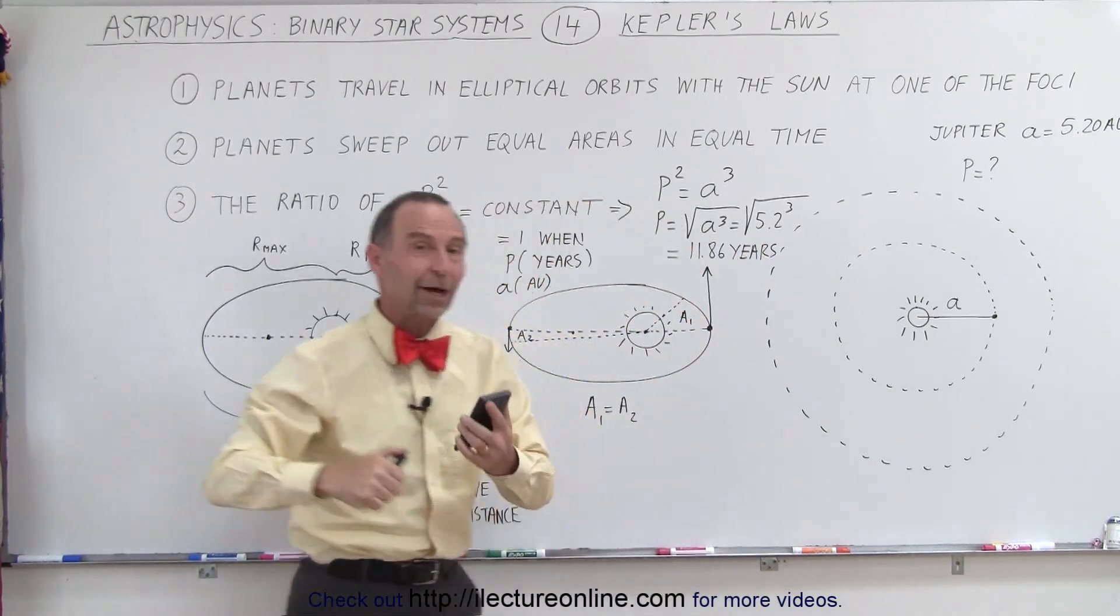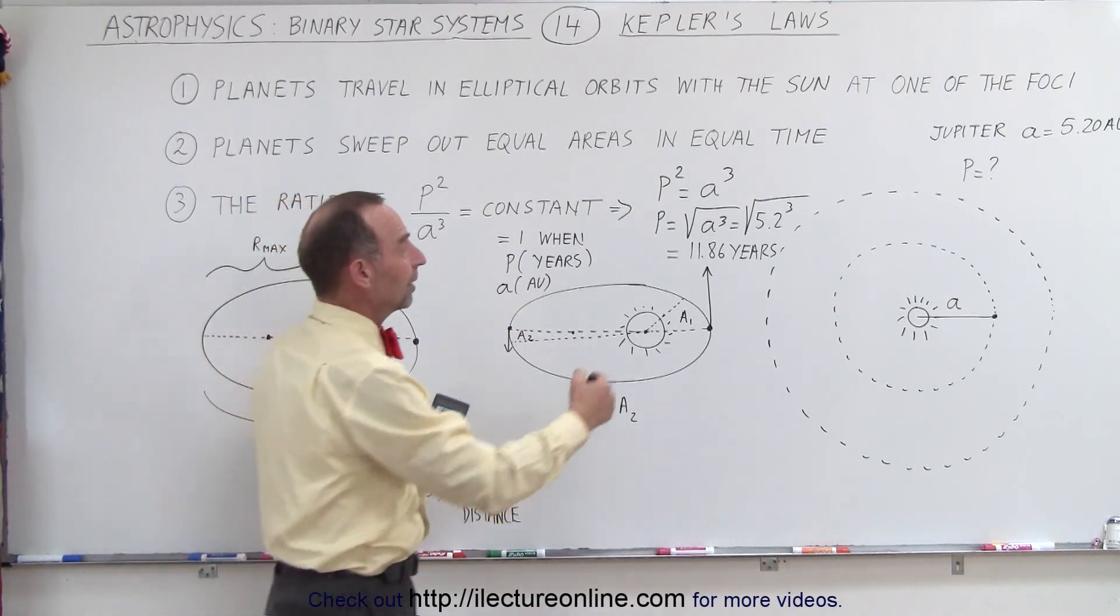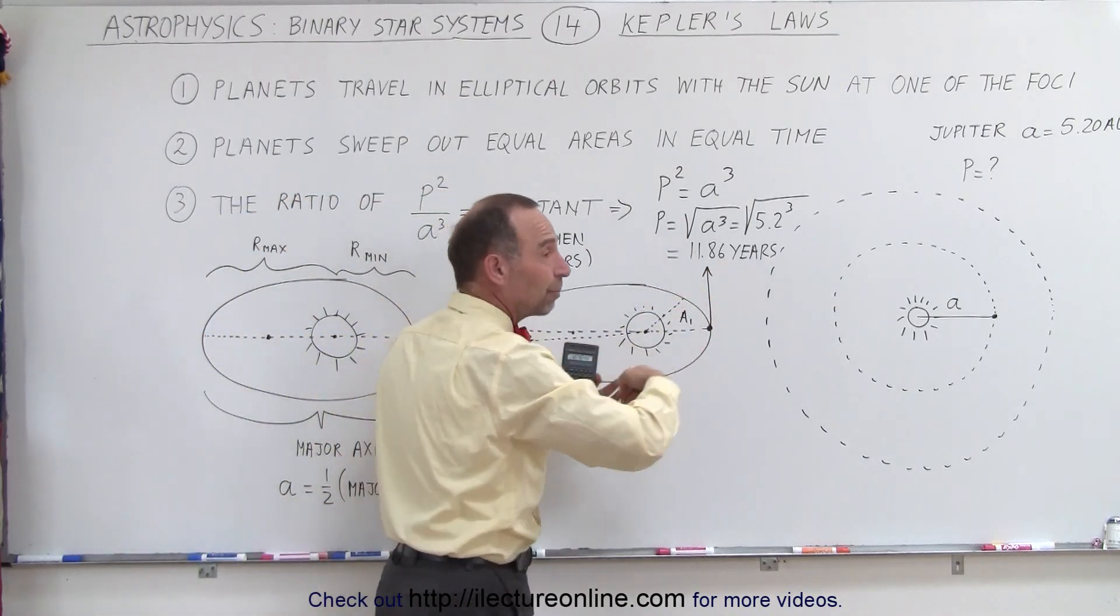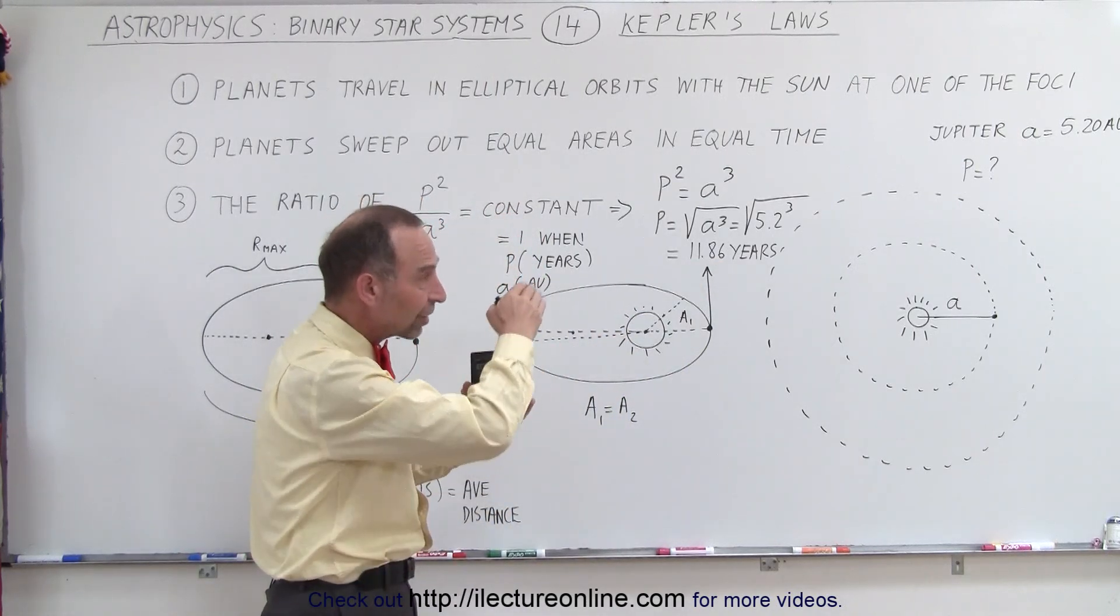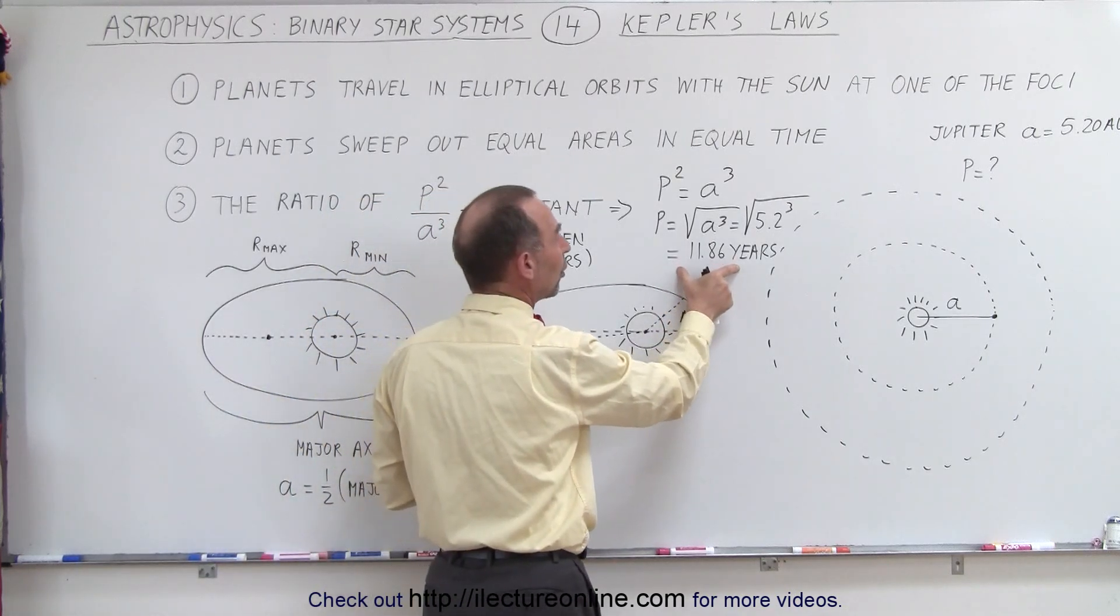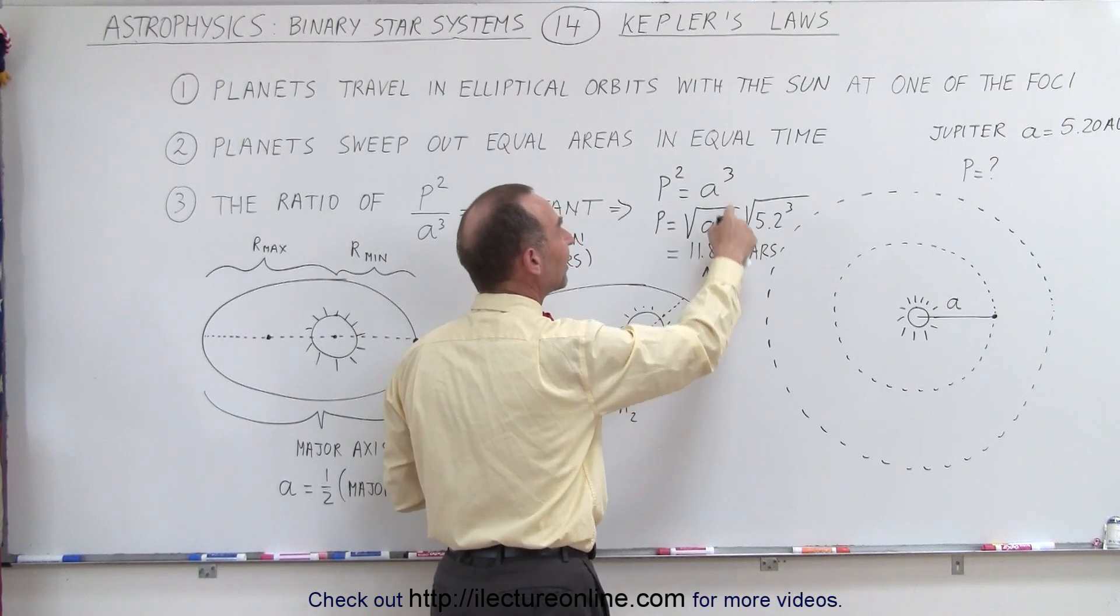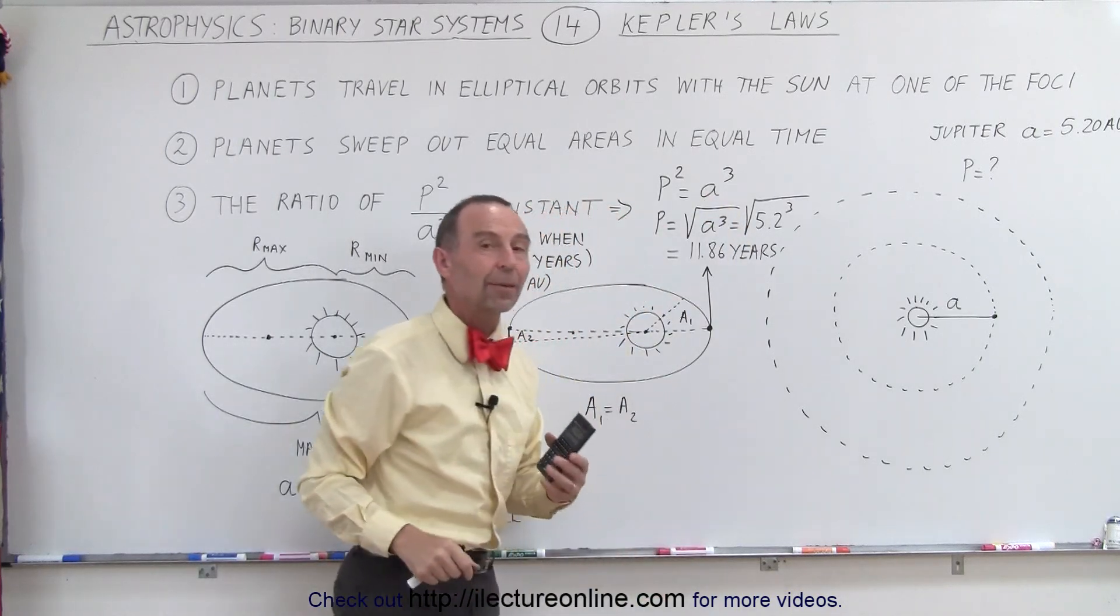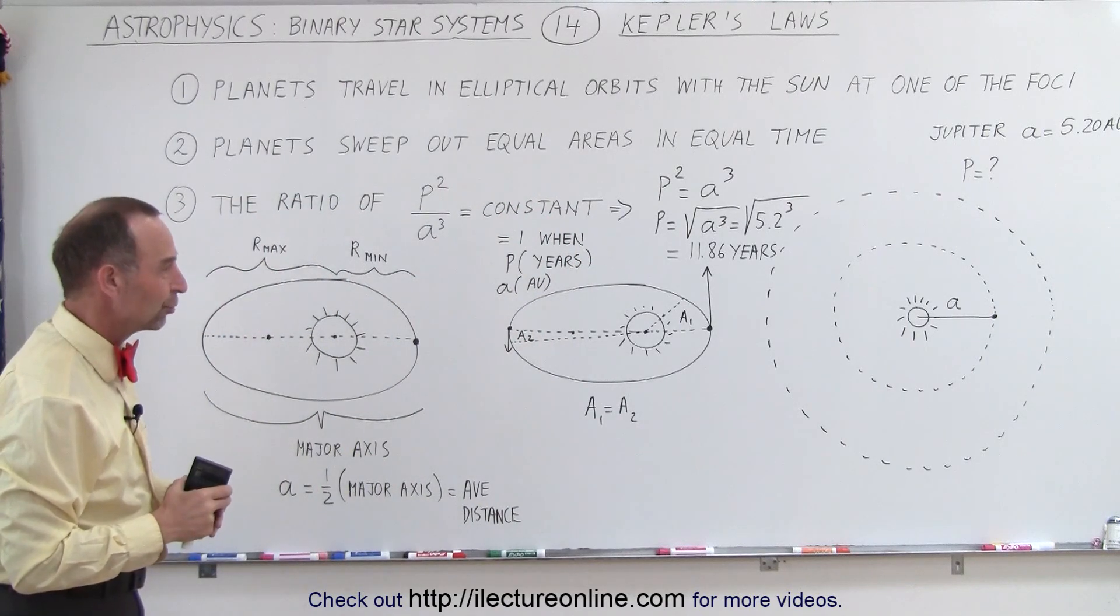Now, of course, Kepler used it the other way around. Once he understood that relationship, he could find the period of the planets by simply looking at Tycho Brahe's notes, or you can measure it yourself. You just kind of keep track of where the planet is at. And after a while, you know how long it takes for the planet to go around the sun. You can then use that to find the distance between the sun and that planet. And that, of course, is how Kepler's third law was first used.